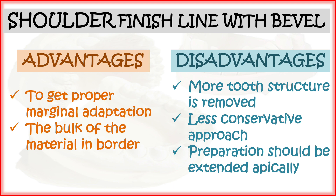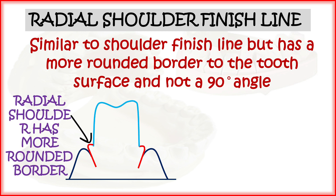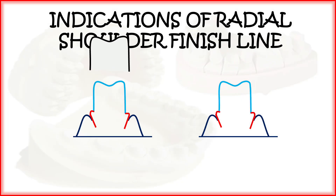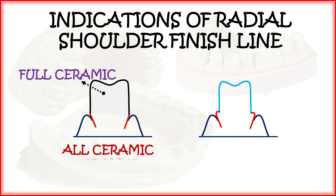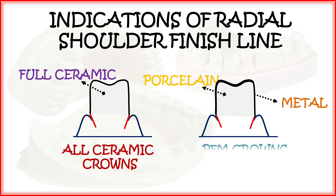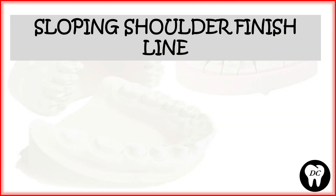The radial shoulder finish line is similar to the shoulder finish line but has a more rounded border and is not at a 90-degree angle. This rounded border improves marginal adaptation. Indications include full ceramic crowns, PFM crowns, and importantly, stress concentration is lesser than the classic shoulder. The sloping shoulder finish line is used on the facial surface of metal ceramic crowns, having a 120-degree angle instead of 90 degrees.